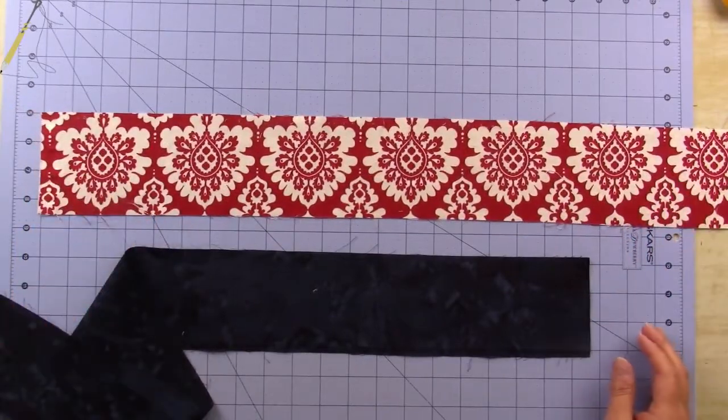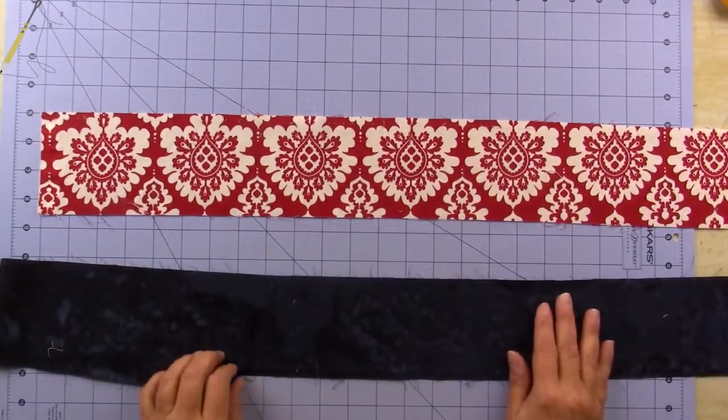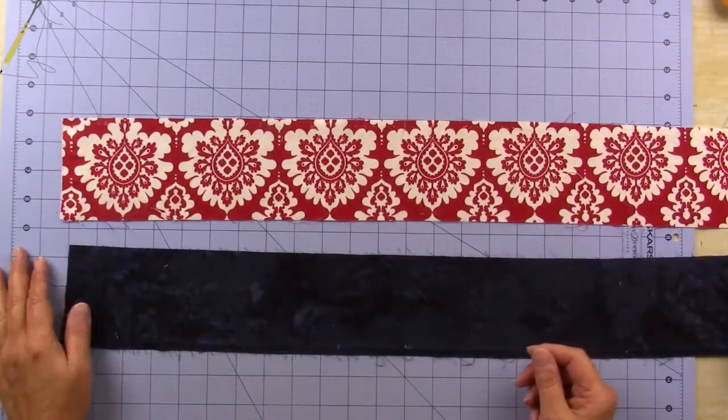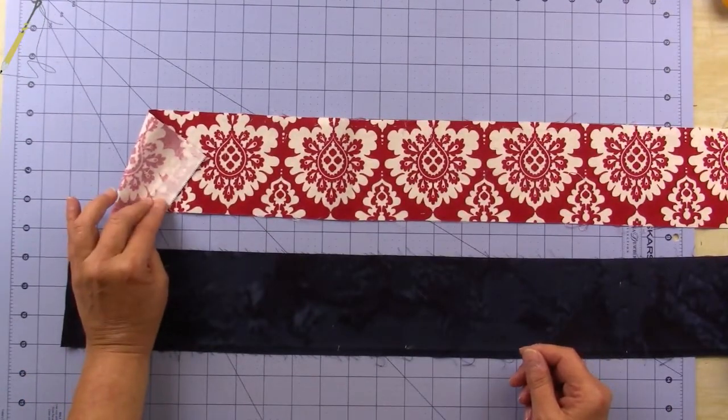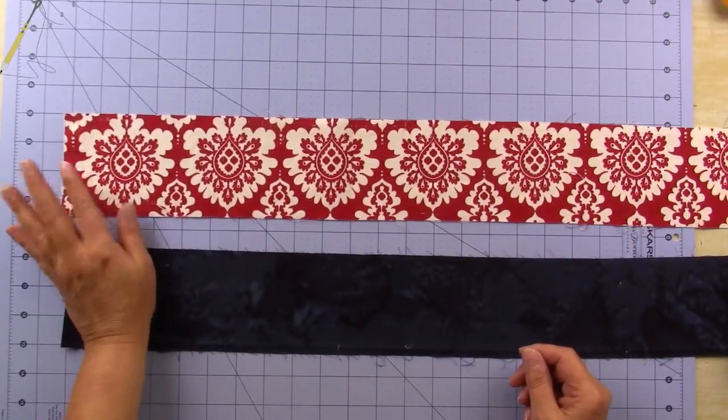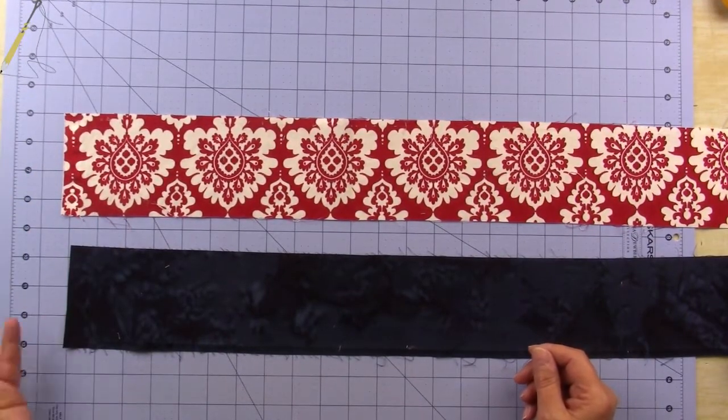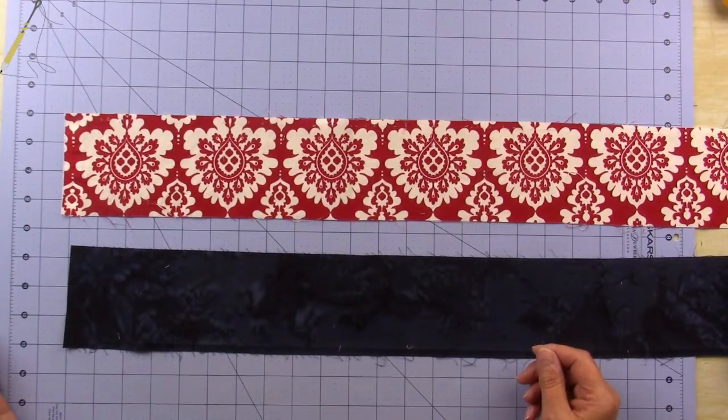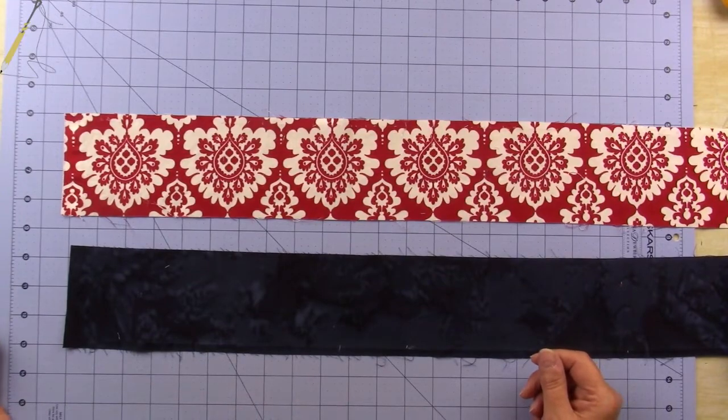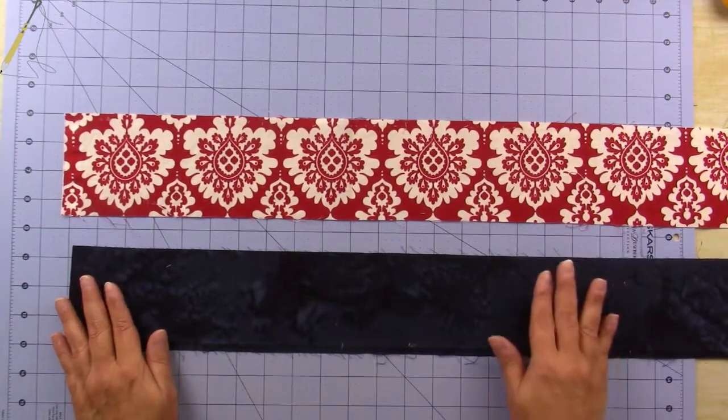Fabric widths are going to vary by manufacturer and even sometimes within manufacturers. Sometimes the selvages are quite large. I like to pre-wash my fabric so it does shrink, so I always use 40 inches of usable fabric when I do all my calculations for how many pieces I need. These are cut three and a half inches wide, both of them.